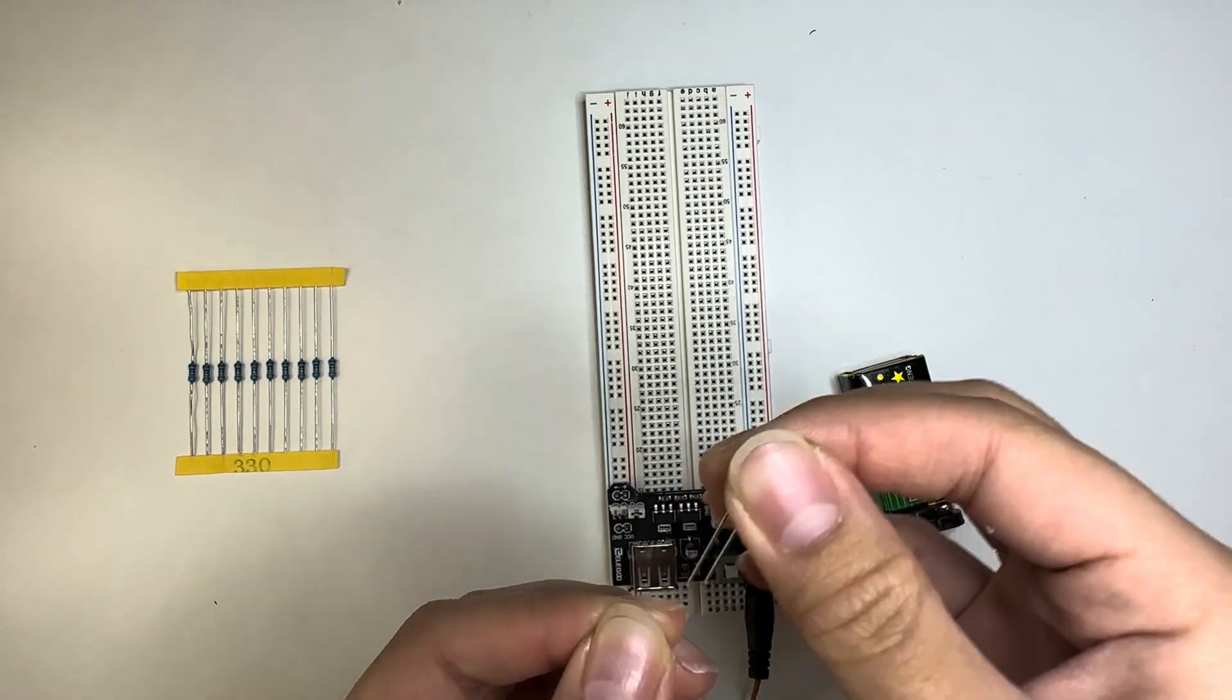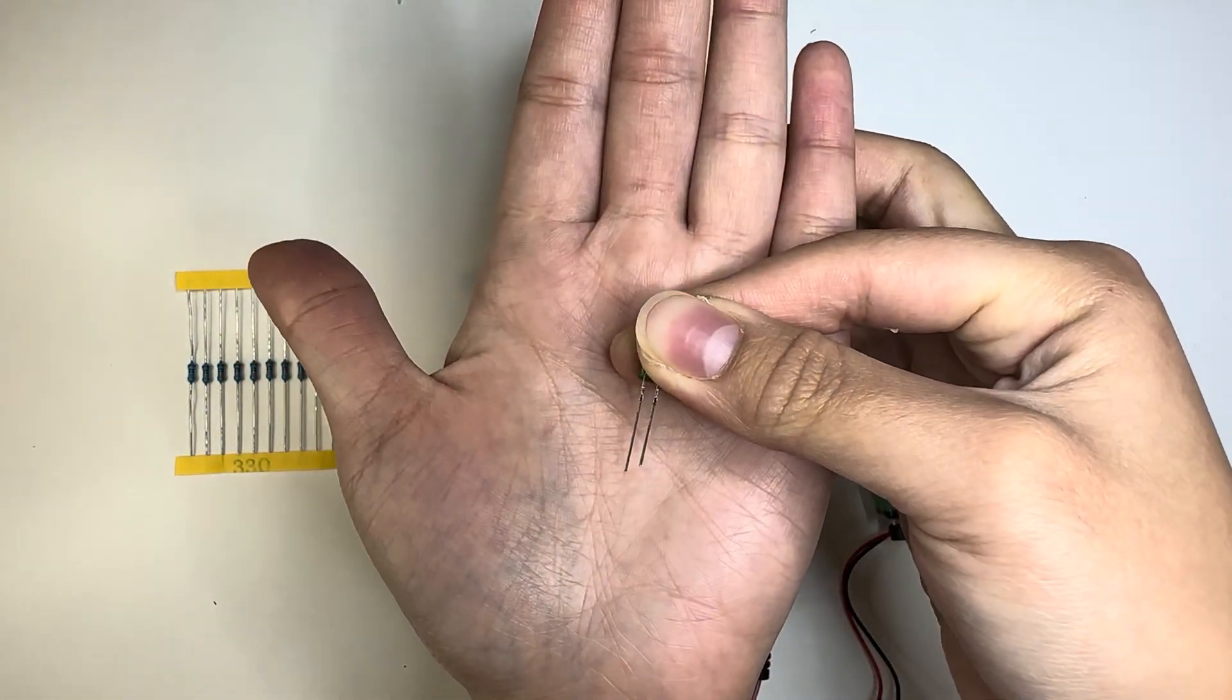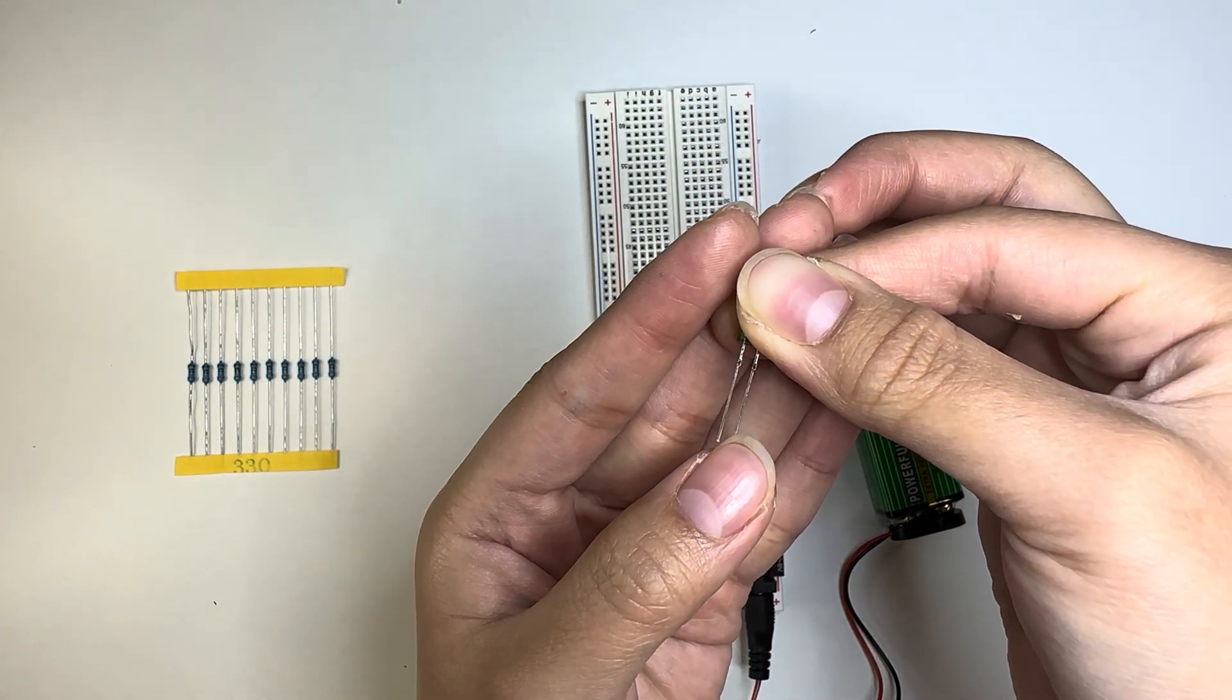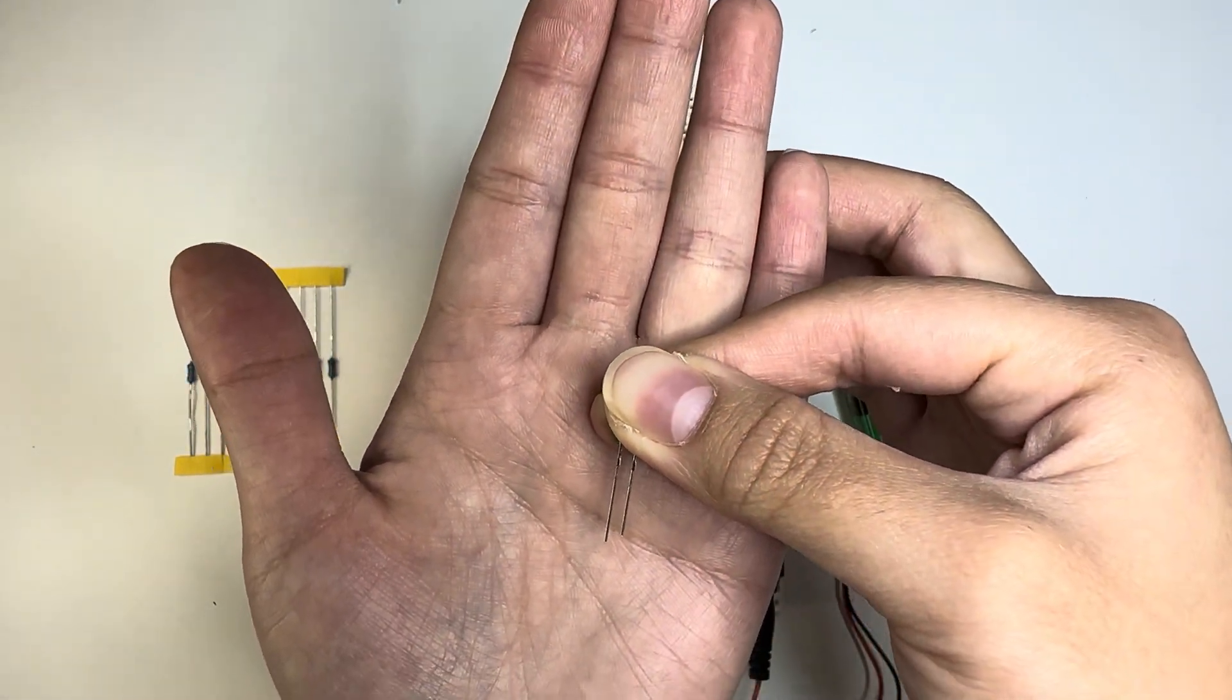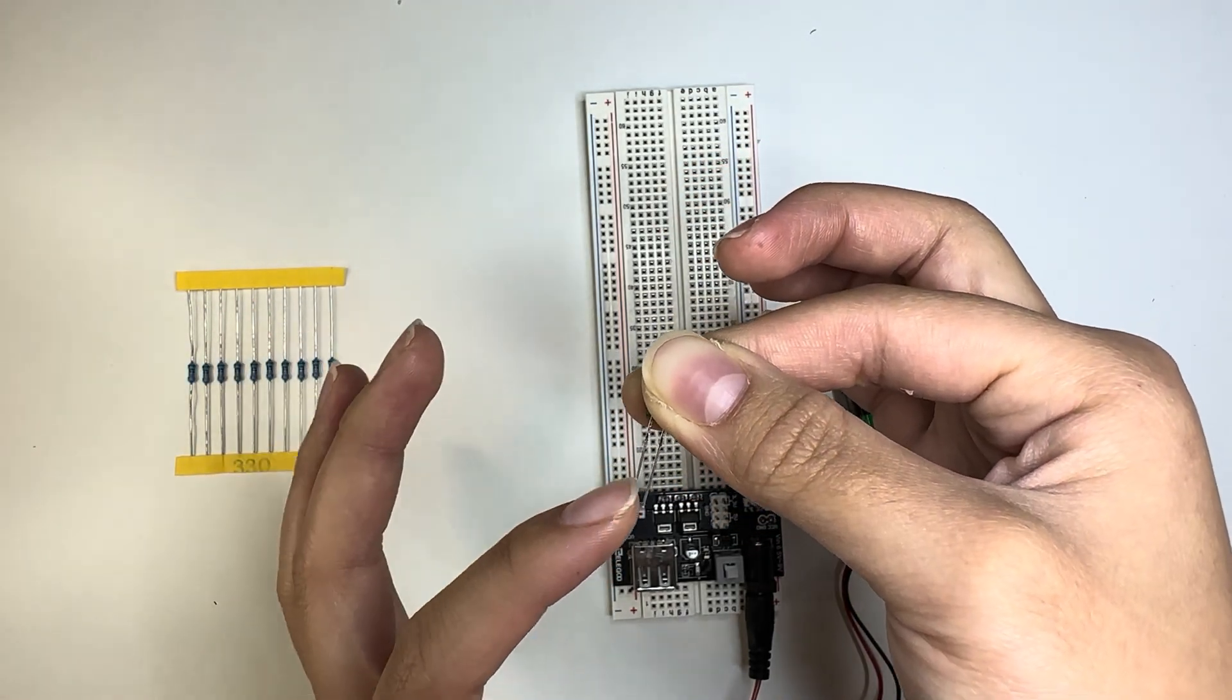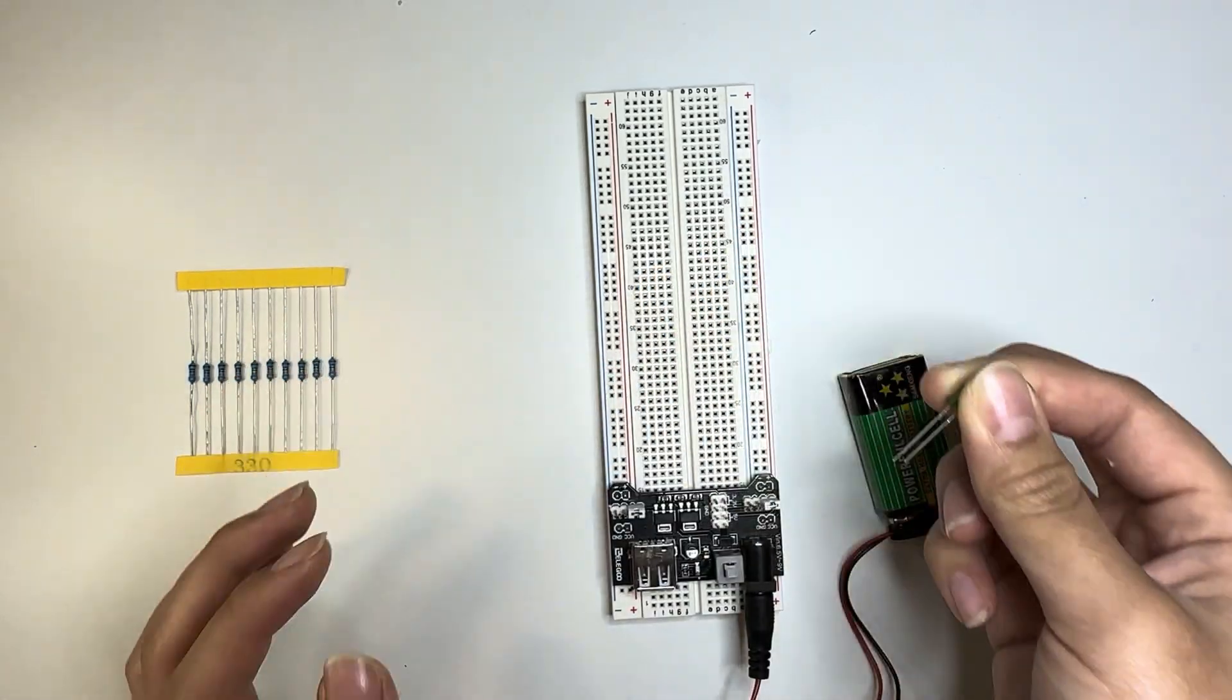Okay? Notice how there's a long prong and there's a short prong. The long prong is anode. The short is cathode. Think of it like cathode for cut, okay? Cut, negative, okay? Long, anode, always, always go to the positive. And cut, negative, goes to the negative.